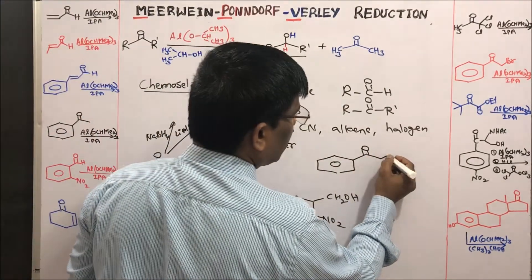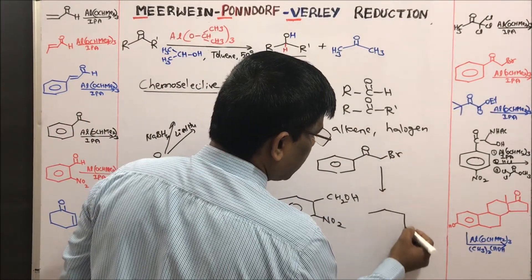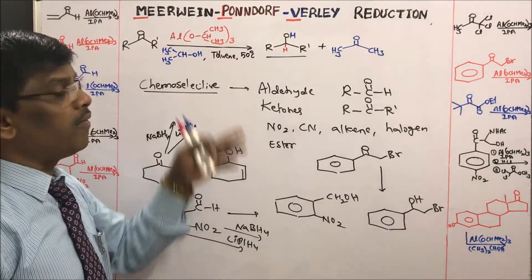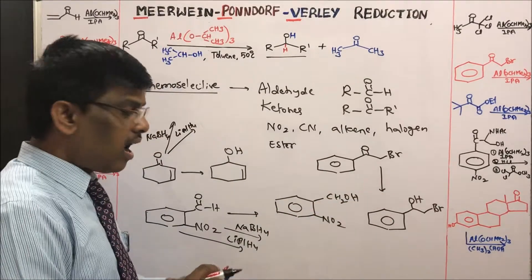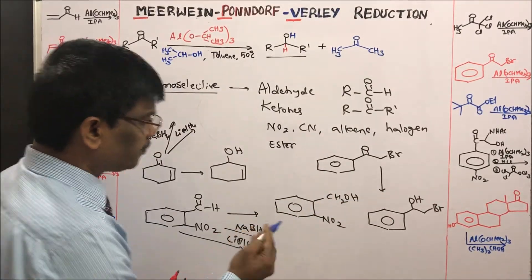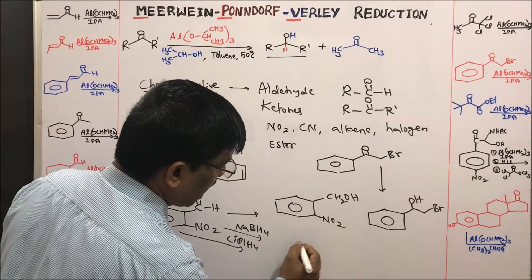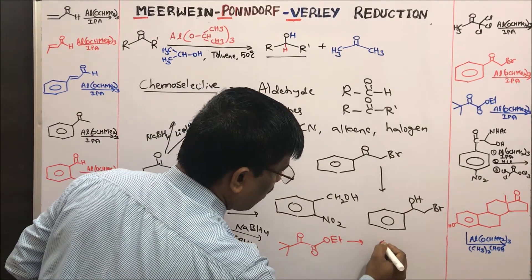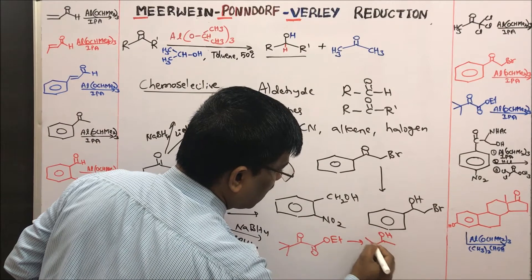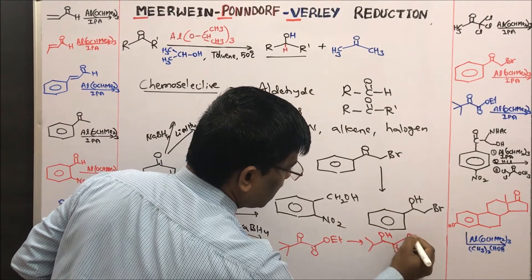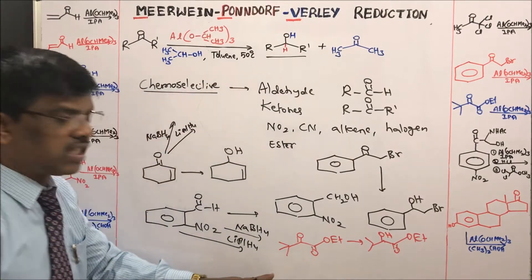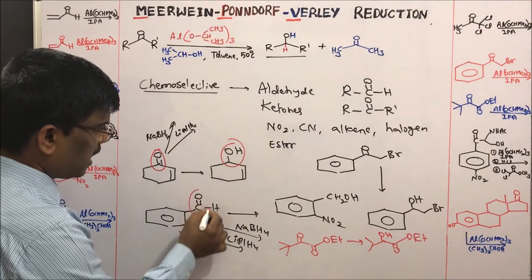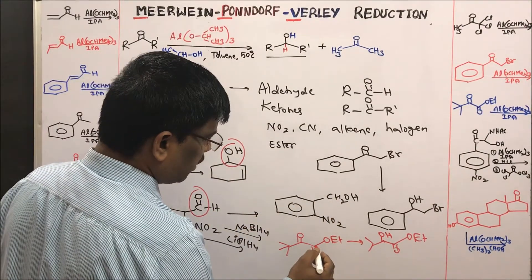Phenacyl bromide is a highly lacrimatory compound that causes eye irritation. To convert phenacyl bromide to styrene bromohydrin, the reagent to think about is MPV reduction. Similarly, if you have a compound with both keto and ester groups and want to reduce only the ketone to alcohol, MPV reduction is chemoselective — it specifically reduces ketone or aldehyde groups only.